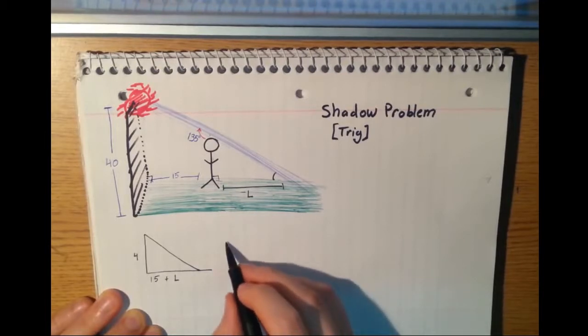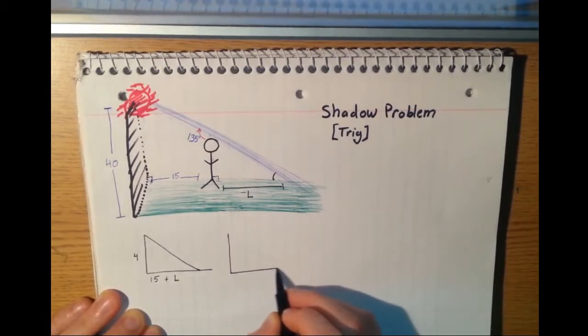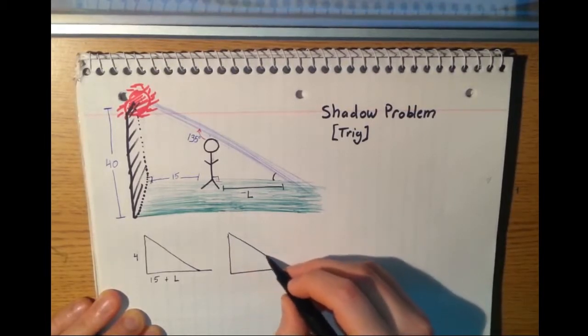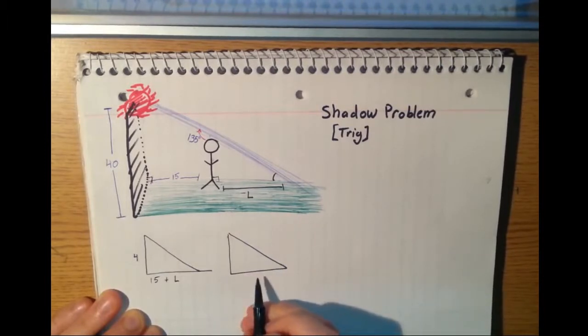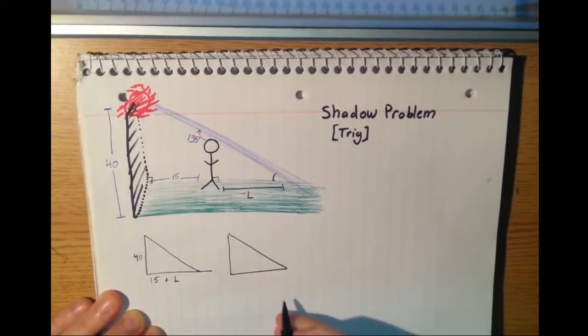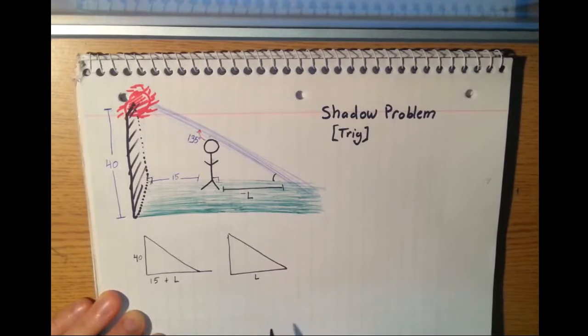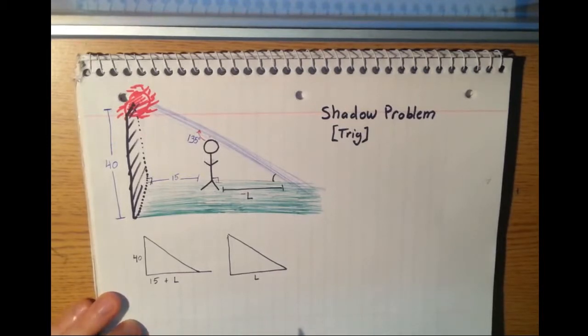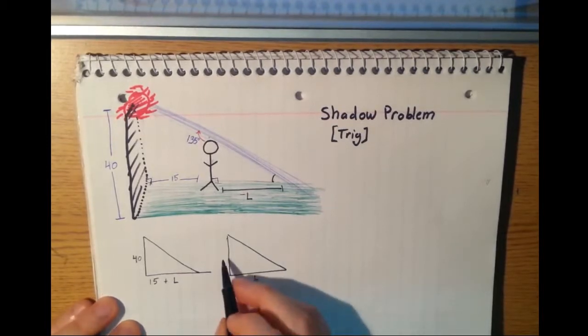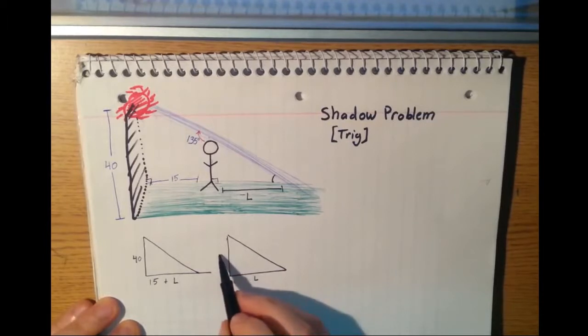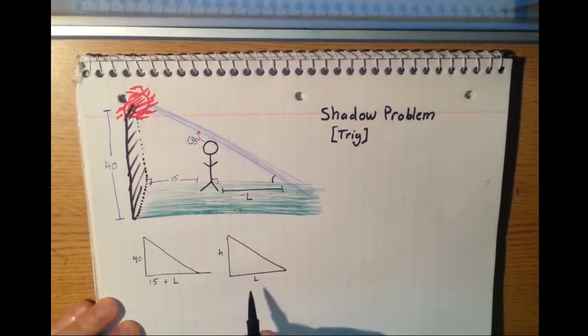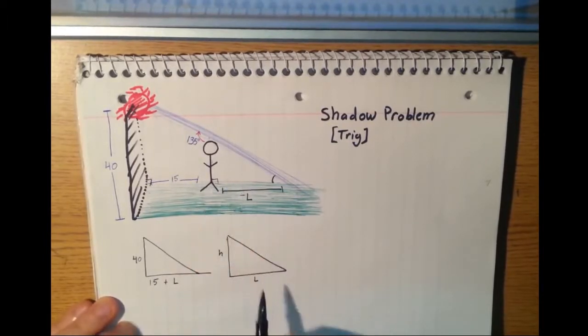And we have our second triangle right here. This is the small one. This is a length of L right here, and that's really for now all we know about it. I'm going to call this right here H for height. This is going to be the height of our man.